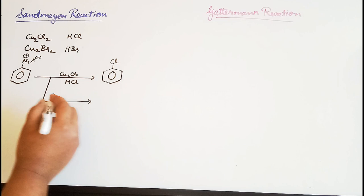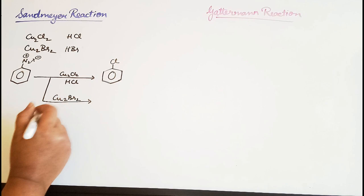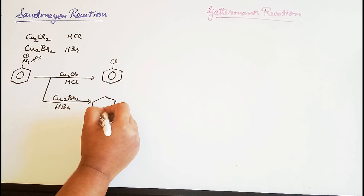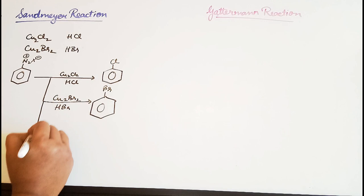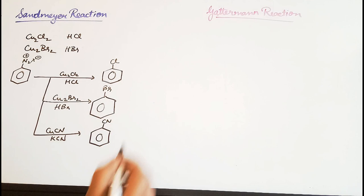If the same reaction with Cu2Br2, that is cuprous bromide and HBr, then obviously it will be replaced by a bromine atom. And the last one is we are taking CuCN in the presence of KCN to replace the diazonium with CN cyanide.